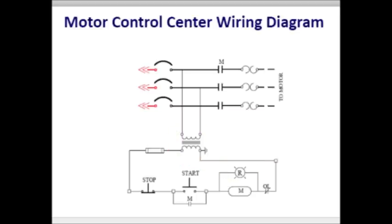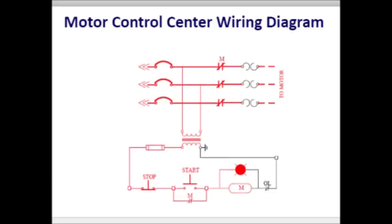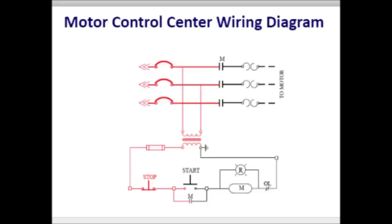With the stop button closed and the start button open, the M contacts are in the open position. When the start button is depressed, the contact is closed and power flows through the coil, illuminating the pilot light, then through the normally closed overload contact, closing the M contacts. When the start button is released, power is maintained to the coil through the auxiliary contact M. When the stop button is pressed, power drops out to the circuit and the M contacts open. Even when the stop contacts return to their normally closed state, power cannot flow until the start button contacts close.